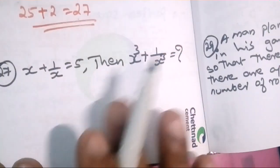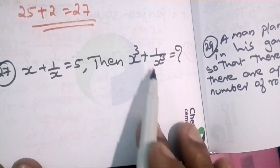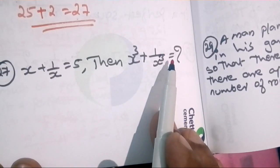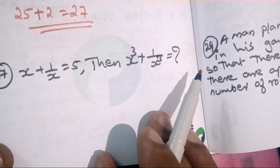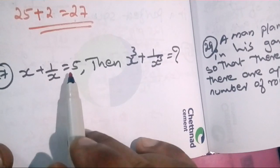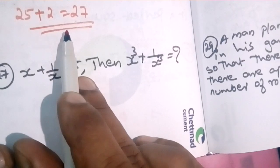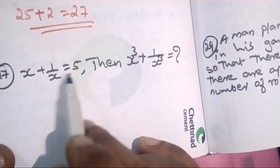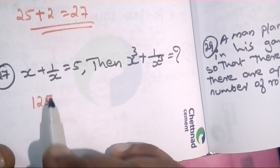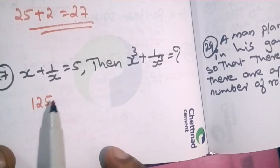Now, x plus 1 divided by x is equal to 5. Then x cubed plus 1 divided by x cubed. We apply the identity: 5 cubed is 125. So 5 cubed is 125, that's how we do it.